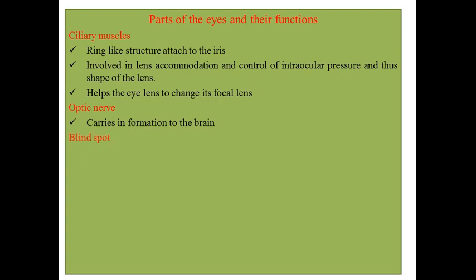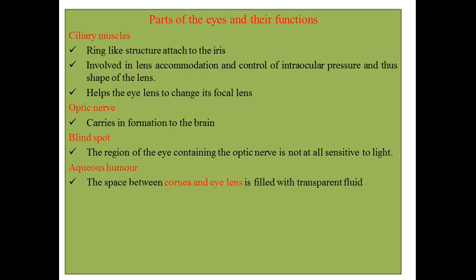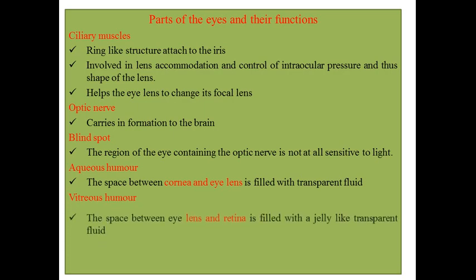The optic nerve is a nerve that carries nerve impulses to the brain, connecting our eye with the central nervous system. The blind spot is a region of the eye that contains the optic nerve and is not completely sensitive to light. The aqueous humor is a space filled with transparent fluid found between the cornea and the eye lens.